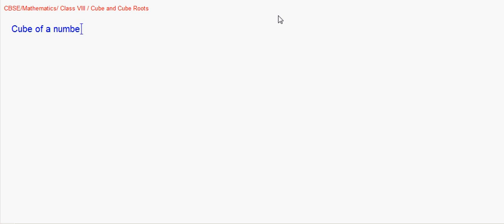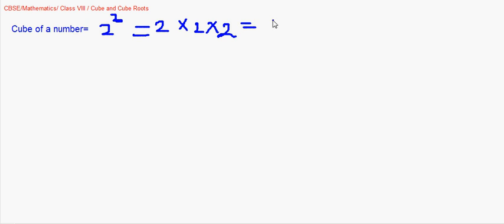Welcome to the first session on cubes and cube roots. Previously we learned about squares and square roots — this is simply an extension of that. A cube is any number raised to the power of 3. For example, 2 to the power of 3 means 2 × 2 × 2 = 8. So 8 is a cube number because it is the cube of 2.